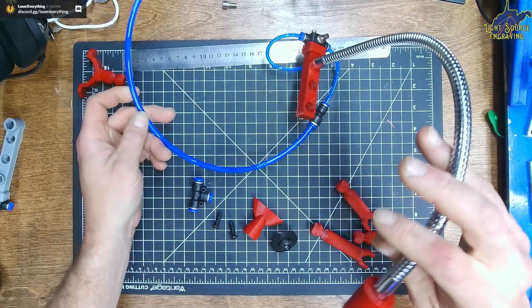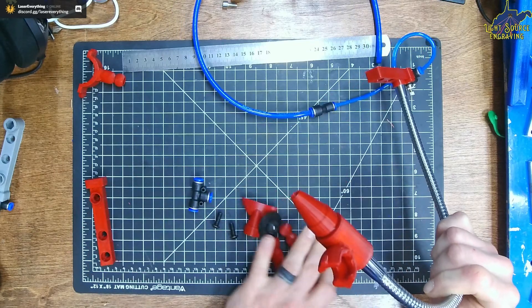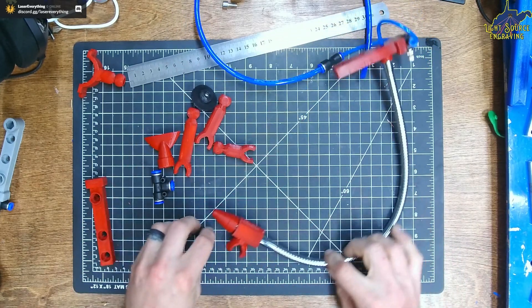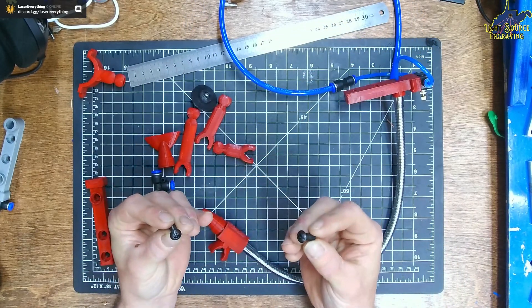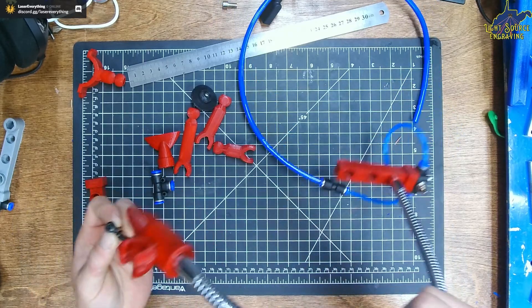When you are ready to install the kit, simply bolt the base to your breadboard. The holes are spaced so that if you wanted to run the tube up through the bottom of your breadboard, you could do that. They are spaced at 25 millimeters.